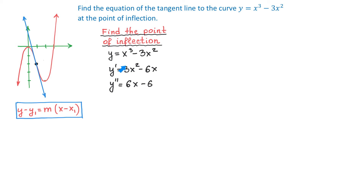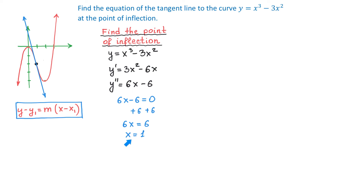For the second derivative, we moved 2 in front and multiplied by 3 to get 6. In the second term, x has exponent 1, and if we decrease it by 1, the exponent becomes 0. Since x raised to 0 is 1, we get 6 times 1 equals 6. Now we set 6x minus 6 equal to 0 and solve for x: add 6 to both sides to get 6x equals 6, so x equals 1. This is the x-coordinate of the point of inflection.